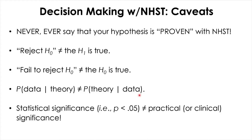A statistically significant result is not necessarily practically significant. However, if a result is not statistically significant, then it is very likely not practically significant either. In any circumstance, you should not equate a statistically significant result with an important result, because the p-value itself does not tell us how important an effect actually is. A very small and unimportant effect can be statistically significant with a large sample size, and a very large and important effect can be missed simply because the sample size is too small.